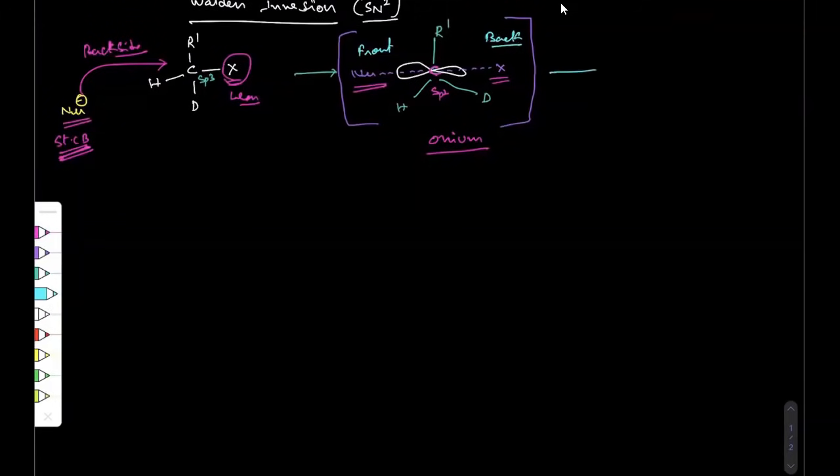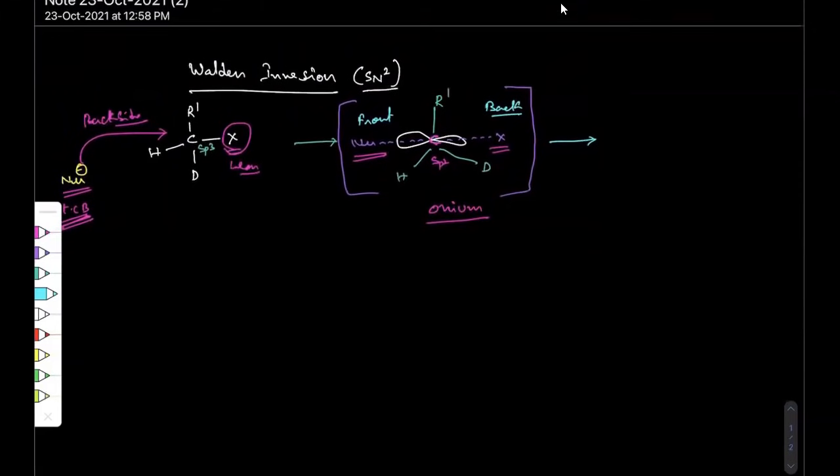And at that particular moment, which I said that chiral carbon turns towards the new incoming nucleophile, which is like inside out state. That inside out state makes the molecule as an inverted product.